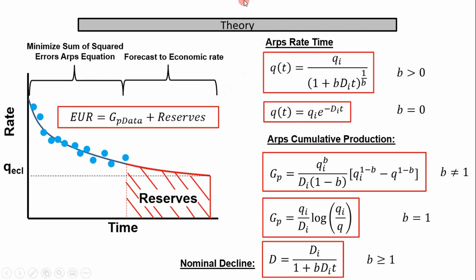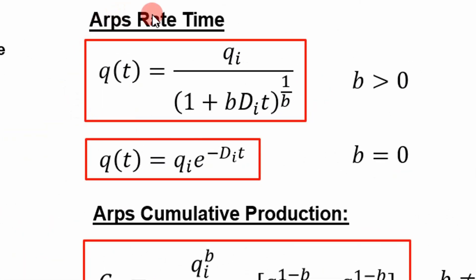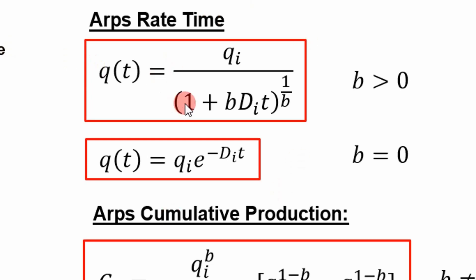Before we get started, let's look at the theory — and don't get caught up in the equation so much. What is important is the logic you go through. The ARPS equation has the initial producing rate, the initial decline, the time, and a B exponent. The B exponent is basically a decline constant: the larger it is, the longer your well produces; the smaller it is, your well doesn't produce as long and you get smaller EURs. The ARPS equation covers three types of well behavior: exponential flow, harmonic flow, and hyperbolic flow.